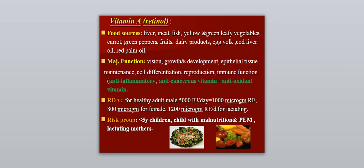Vitamin A, also called retinol. Food sources include liver, meat, fish, yellow and green leafy vegetables, carrots, green peppers, fruits, dairy products, egg yolk, cod liver oil, and red palm oil. The major function is vision, and it is important for growth and development, maintenance of epithelial cells, cell differentiation, reproduction, and immune function. It also acts as an anti-inflammatory, anti-carcinogenic, and antioxidant.